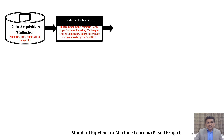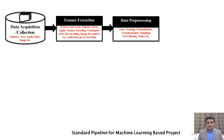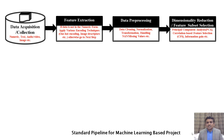After feature extraction, the next step is data pre-processing. Since the data we have gathered may not be in a form suitable for processing, we may have to pre-process that data. During data pre-processing, we may perform data cleaning, normalization, transformation, and handling of NaN or missing values.